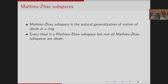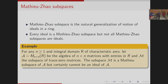Some comments on Mathieu-Zhao subspaces: they are a natural generalization of the notion of ideals in a ring. Every ideal is a Mathieu-Zhao subspace, but not all Mathieu-Zhao subspaces are ideals. For example, consider an integral domain R of characteristic 0 and let A be the algebra of n×n matrices with entries in R. The subspace M of trace-zero matrices: if all powers of a matrix also have trace zero, it turns out to be nilpotent. The subspace of nilpotent matrices does not form an ideal of A, but it does form a Mathieu-Zhao subspace of A.